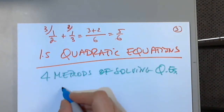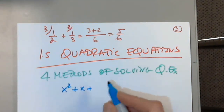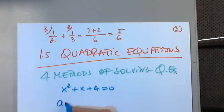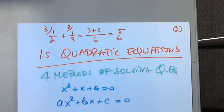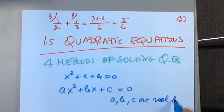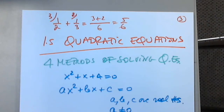An example is x squared plus x plus one equals 0. In the standard form ax squared plus bx plus c equals 0, a cannot be 0, though b and c can be 0. If a equals 0, what is left? It becomes linear — so then we're not talking about a quadratic equation anymore.